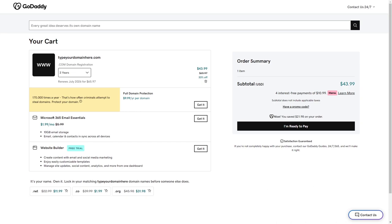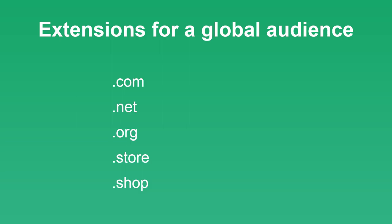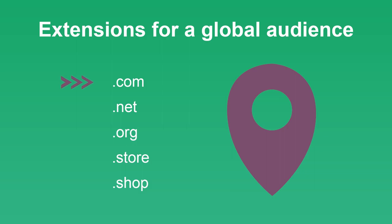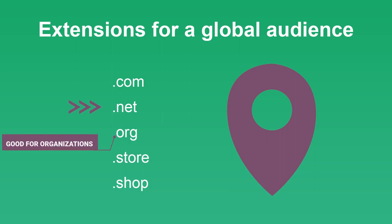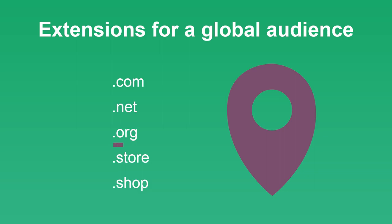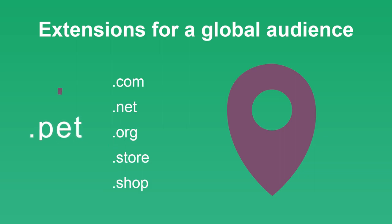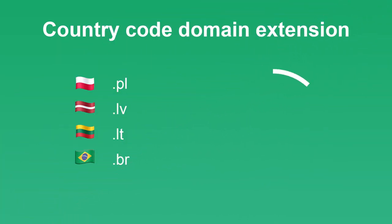If you're building a website for a local audience in a specific language, look for other options. These aren't strict rules — for e-commerce stores you can choose .store, .shop, or similar. I personally use .pet for one e-commerce store that is a cat toy store and it works very well. For non-English audiences, your best choice is a country-code domain name.